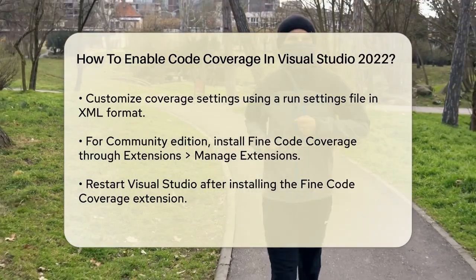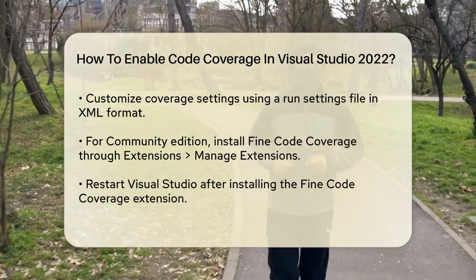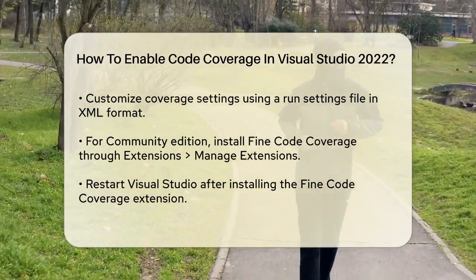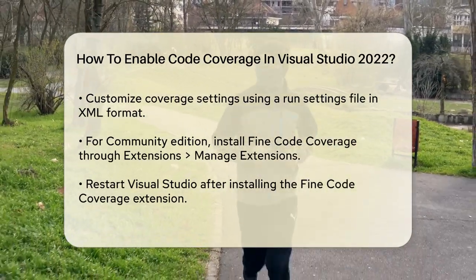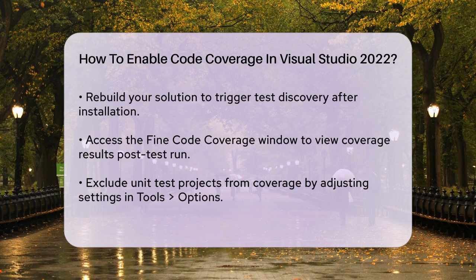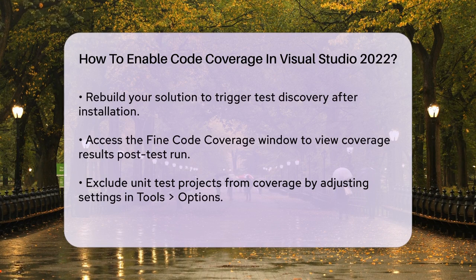Using the Fine Code Coverage Extension in Community Edition: if you're using the Community Edition, you can install the Fine Code Coverage Extension. Open Visual Studio and go to Extensions, then Manage Extensions. Search for Fine Code Coverage in the Online Extensions, select it, and click Download. Close Visual Studio to install the extension. Once installed, restart Visual Studio.